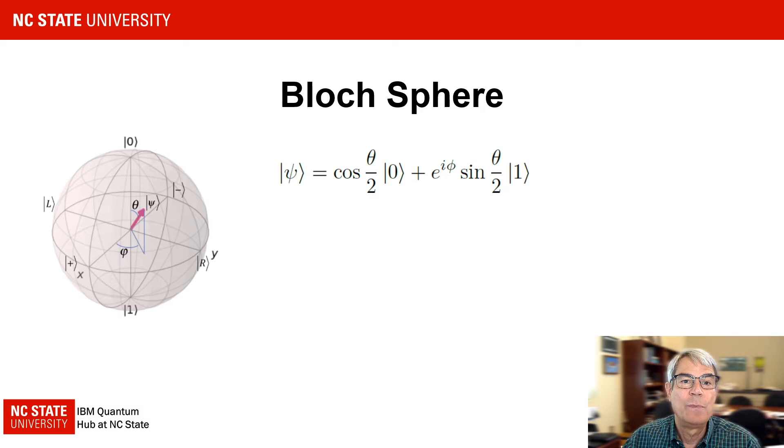Any single qubit state can be represented by a unit vector directed from the origin to a point on the sphere. The action of single qubit gates can be visualized as rotations of the state along the surface of the sphere. As I indicated in the first slide, the question I would like to address in this video is where does this equation come from?